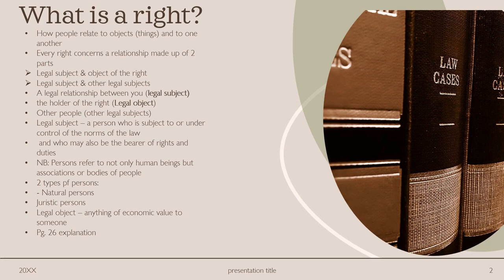If you turn to page 26 in your ILW1501 textbook, there's a quick example I want to read. It says: 'I have a right to my car, to my book, to my services of my employee, to the invention which I have patented, to delivery of the thing which you have sold me. I also have the right against the person who has sold me a car, against my employees who must provide me with their services, against all others who must respect my rights to my car, my book, and so forth.' So this is basically explaining what they mean.